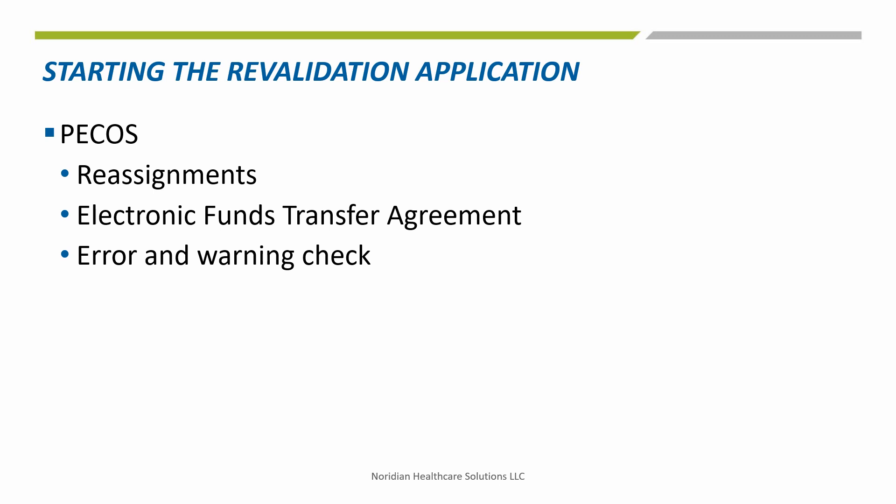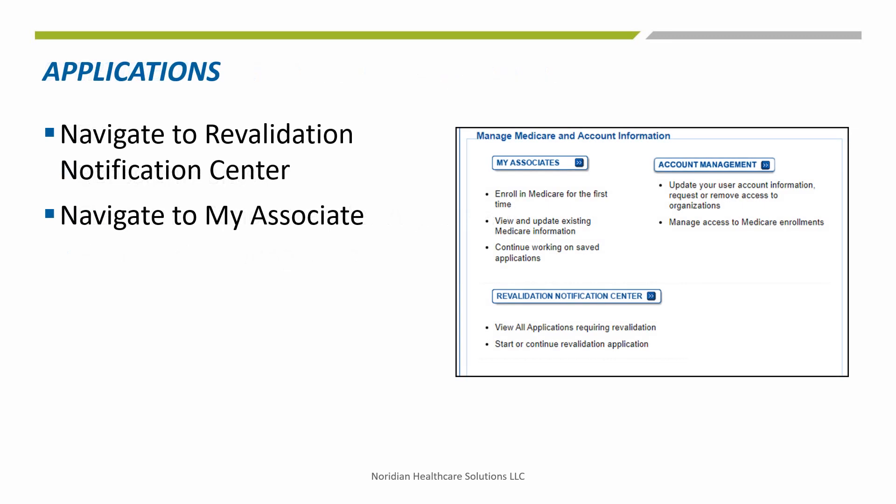PECOS will also show you if there are any errors on the application for most topics. There are a couple of ways that you can start a revalidation application after logging into PECOS: one, navigate to the Revalidation Notification Center, or two, navigate to My Associates.